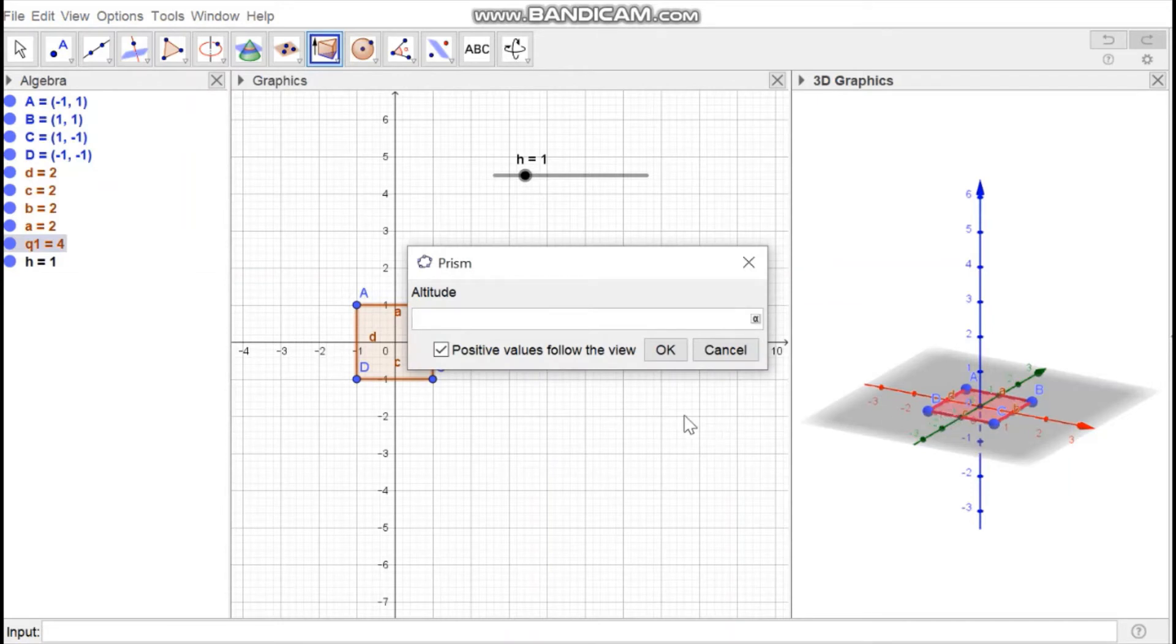An input box opens which asks for the height value of the object. In that, write the name of the slider you created, which is h, and press OK.